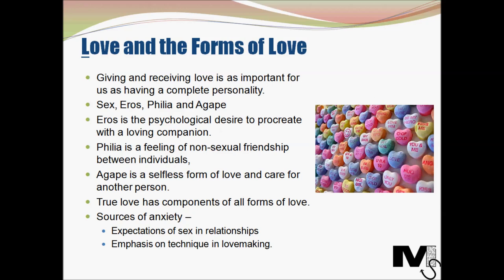The next concept is love and the forms of love as proposed by May. May believed that love is an essential part of human development. He stated that giving and receiving love is as important for us as having a complete personality — it's really important for our development and our existence. He identified four types of love: sex, eros, philia, and agape.